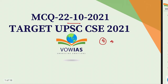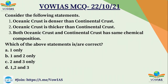First let us discuss the question that was asked yesterday. Yesterday's question was: consider the following statements. First one, oceanic crust is denser than continental crust. Second one, oceanic crust is thicker than continental crust. And third one, both oceanic crust and continental crust have the same chemical composition. The options were: A) 1 only, B) 1 and 2 only, C) 2 and 3, and D) 1, 2 and 3.